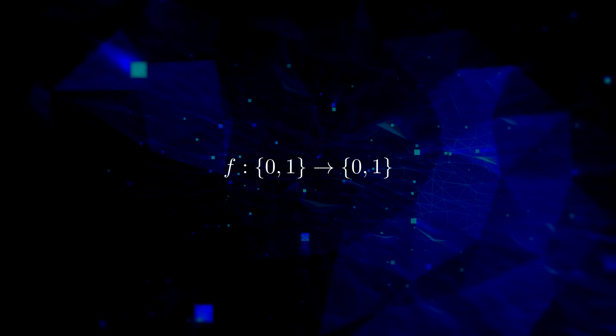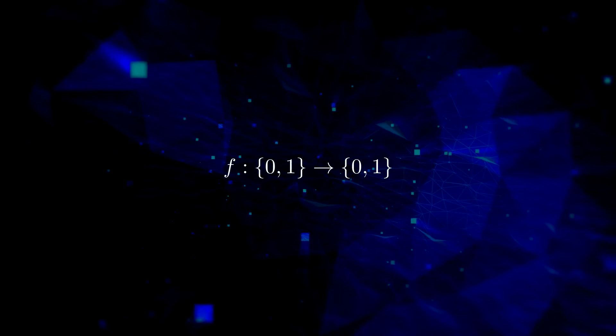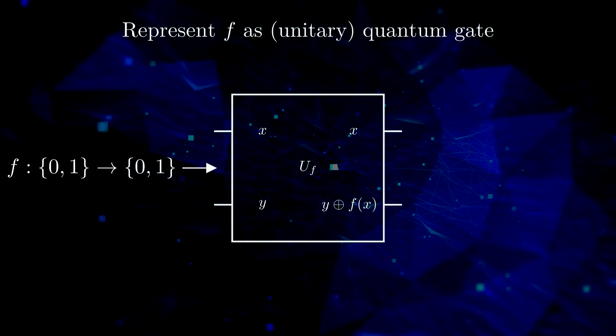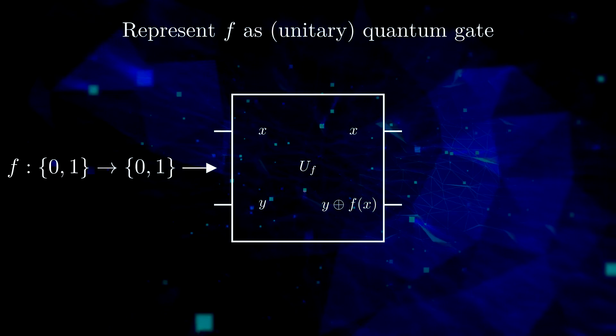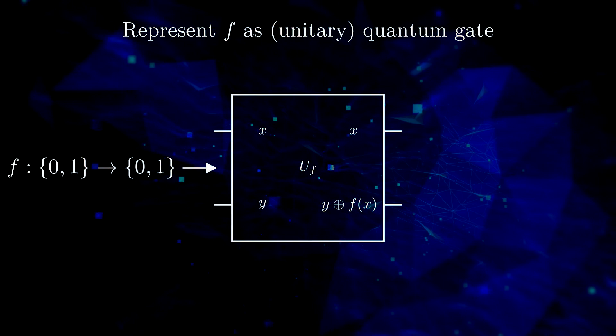We remedy this by wrapping a box around f that copies the input. But it actually does a little more. The output of f is combined with an input wire by adding their values modulo 2. We write this as below with the tensor product.